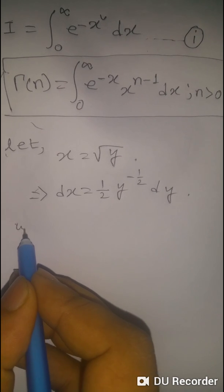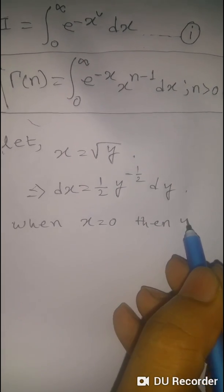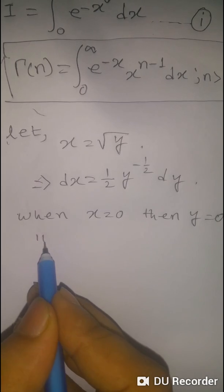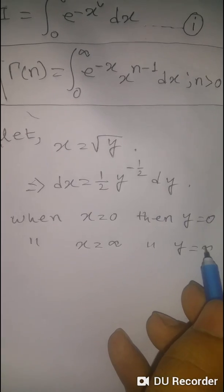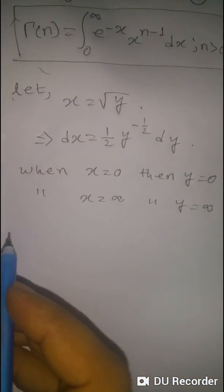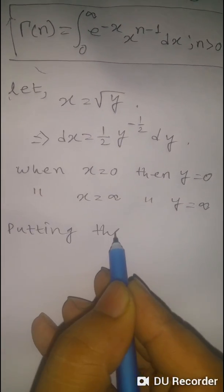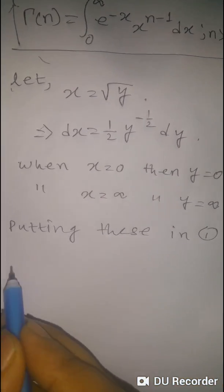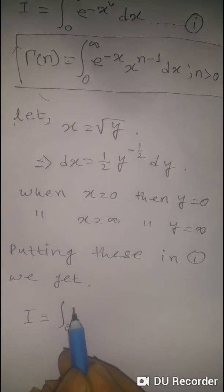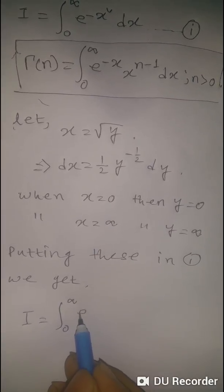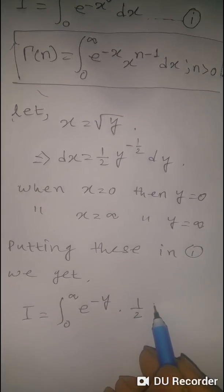Then for the limits, when x equals 0, y equals 0, and when x equals infinity, y equals infinity as well. Putting this into the integral, we get I equals integral from 0 to infinity of e to the power negative y times half y to the power negative half dy.